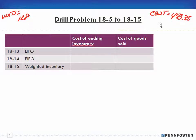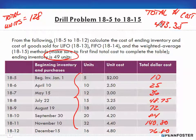That covers problems 5 through 12. Now for problem 13 — we're going to be bouncing back and forth between slides to calculate this. For problem 13, we're doing LIFO, and our ending inventory is 49 units.